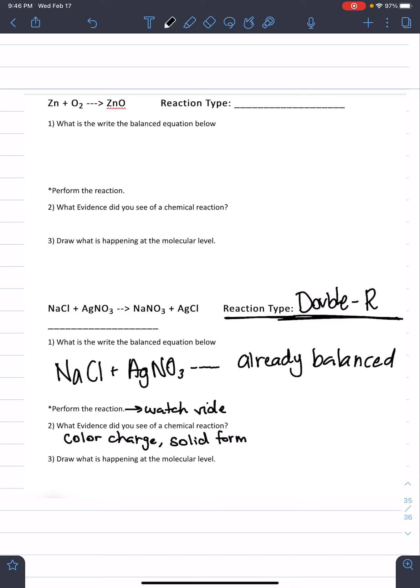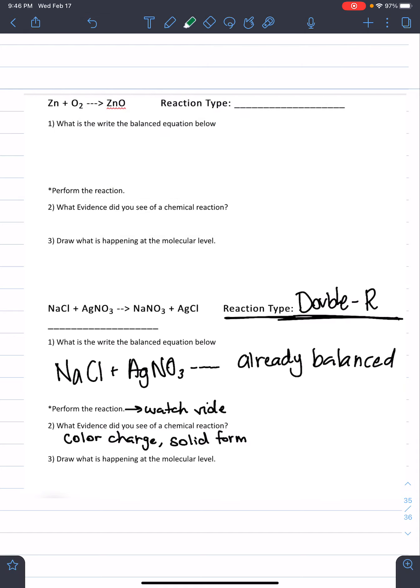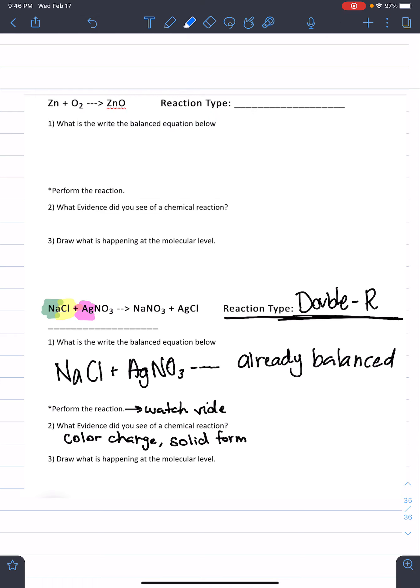Now, the next part is the tricky part. And it says, draw what is happening at the molecular level. So, what you need to do, you can do this pretty easy on Kami. You'll assign each element a different color. So, for example, I might do Na as a green. I might do Cl as a yellow. I might do Ag as a pink. And NO3. Remember, since it's a polyatomic, it stays stuck together on both sides. I'm going to do that as a blue. So you know that the NO3 can be all together. Because you see it here and stuck over here.